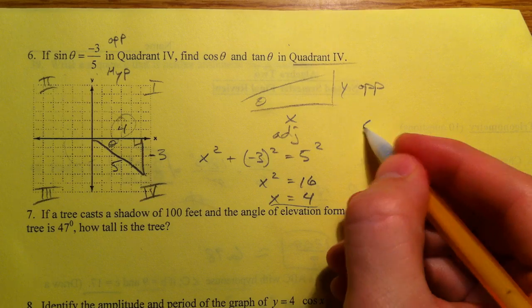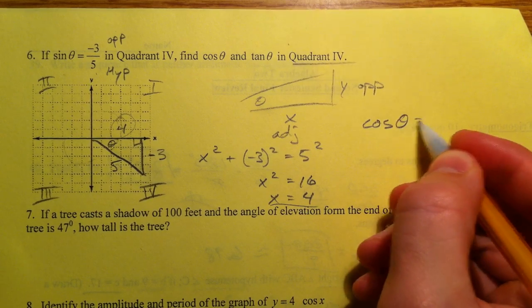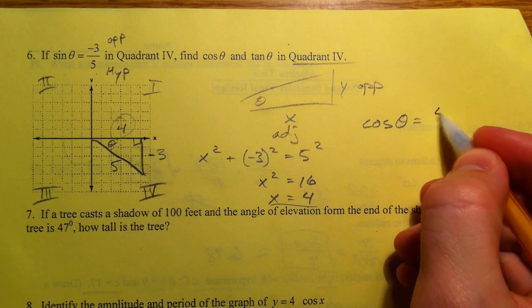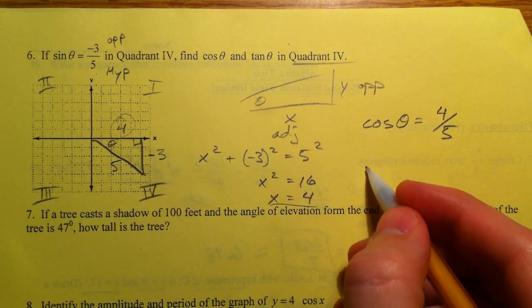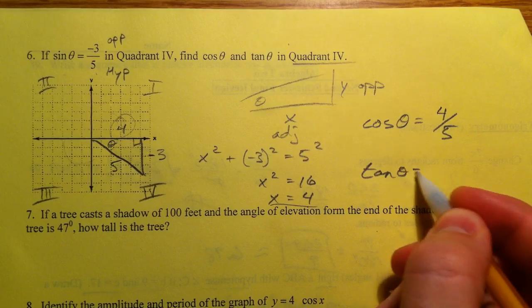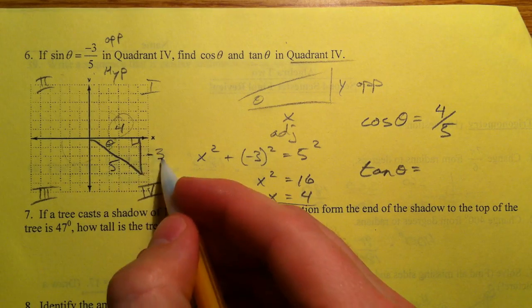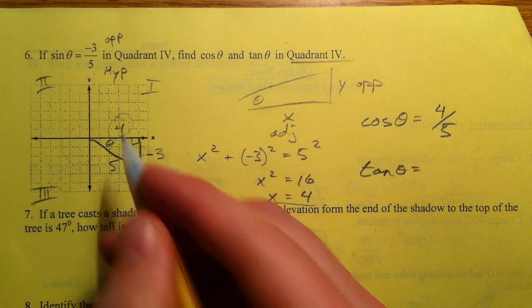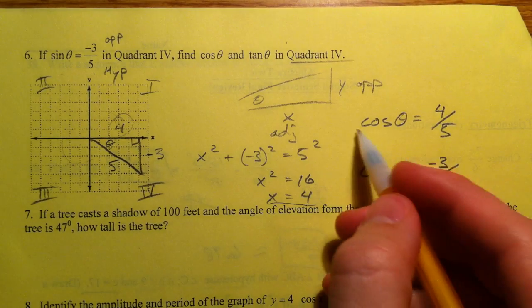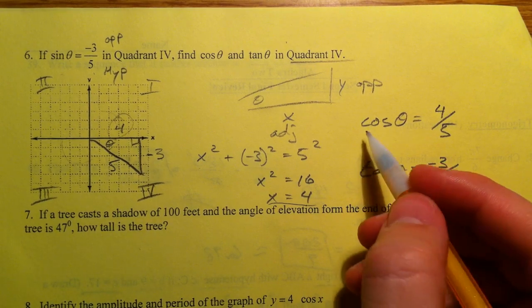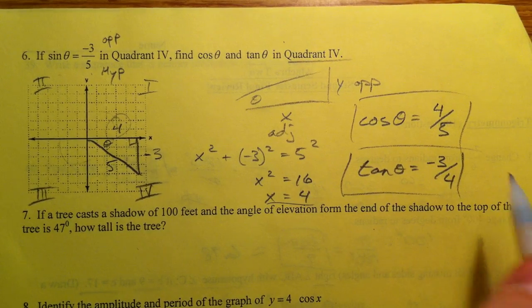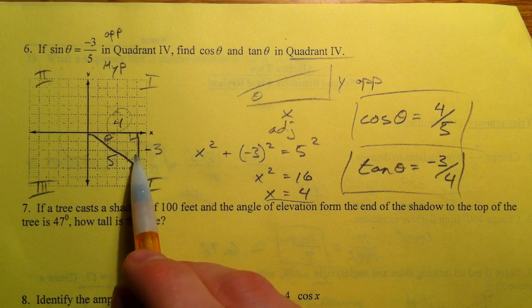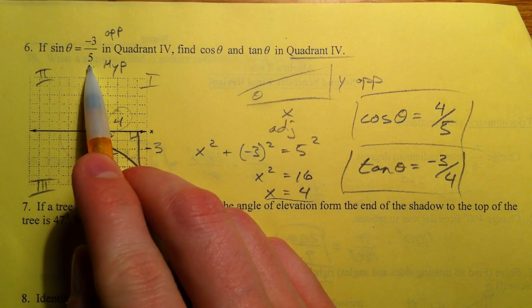So then the cosine of our angle is going to equal 4 over 5, which is the adjacent over the hypotenuse. Our tangent of our angle is going to equal the opposite over the adjacent, negative 3 over 4. And there's your cosine and your tangent. It's all based on can I draw the triangle based on this information.